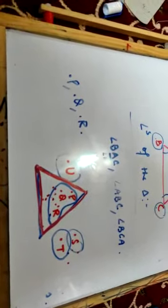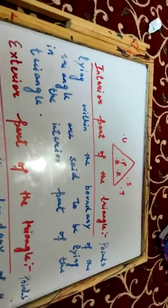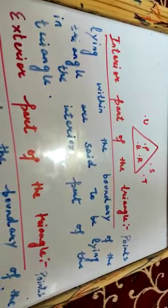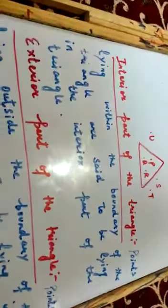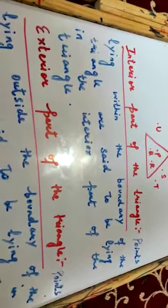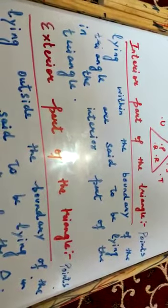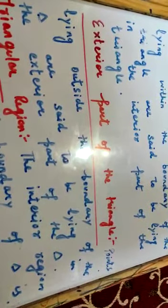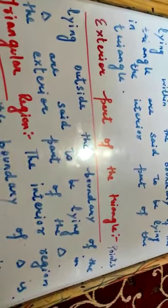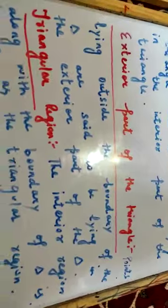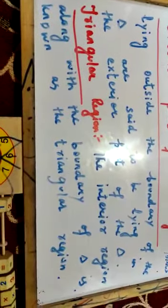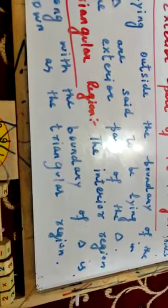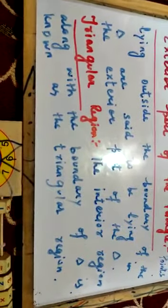So these three points we will note down. First is interior part of the triangle — points lying within the boundary of the triangle are said to be lying in the interior part. Exterior part — points lying outside the boundary of the triangle are said to be lying in the exterior part. And triangular region — the interior region along with the boundary of the triangle is known as the triangular region.